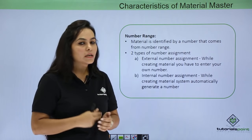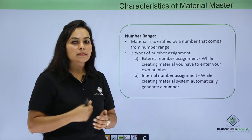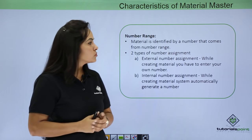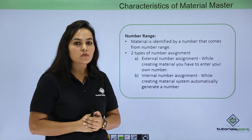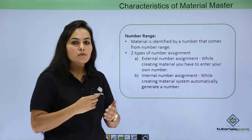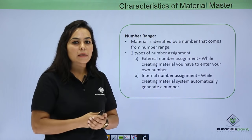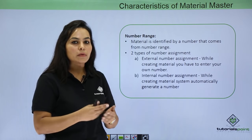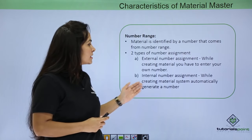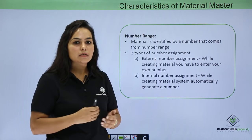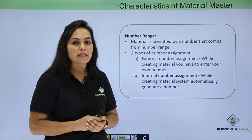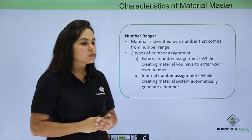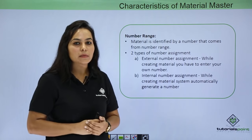Next is Number Range. A material is identified by a number that comes from a number range, and two types are possible. First is External Number Range — if you want to define a material according to your wish, you can give your own material number or name. The second is Internal Number Assignment — if you want a system-generated number when defining a material, you can define it using Internal Number Assignment.